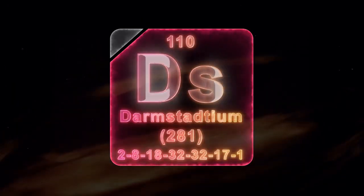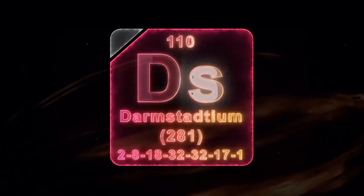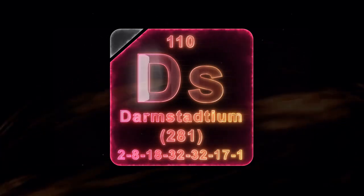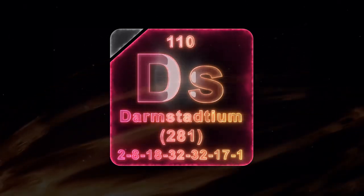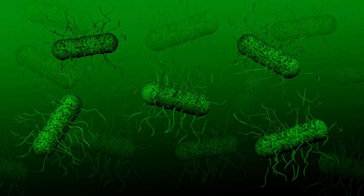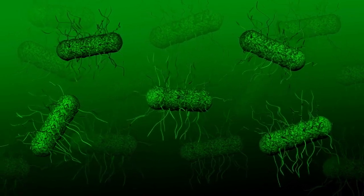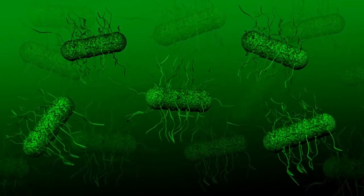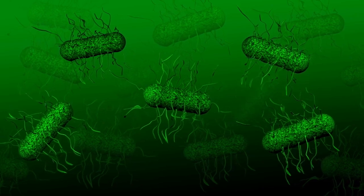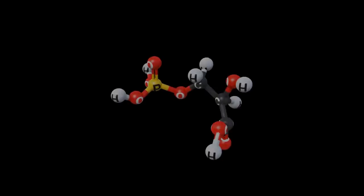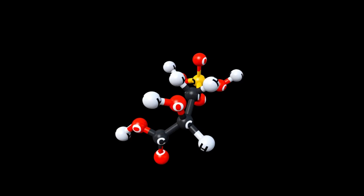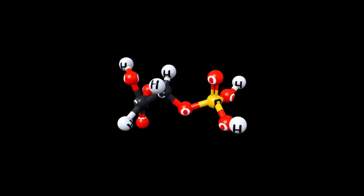DMS is produced exclusively through biological processes on Earth, particularly by microorganisms in the oceans. This is significant because on Earth, DMS is a reliable biomarker for life. Its presence in the atmosphere of K-218b suggests that there could be biological processes occurring on the planet.